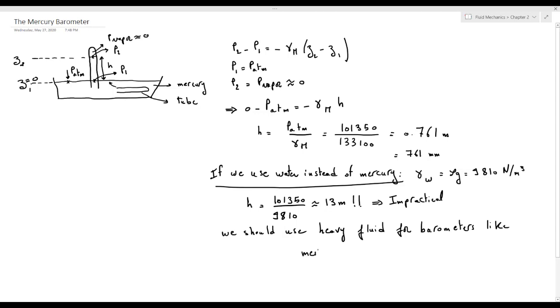Mercury is a heavy fluid that has a very large gamma compared to gamma of water. This results in a small level of H compared to the level when using water. We can say that mercury is more suitable for use in the barometer than water.